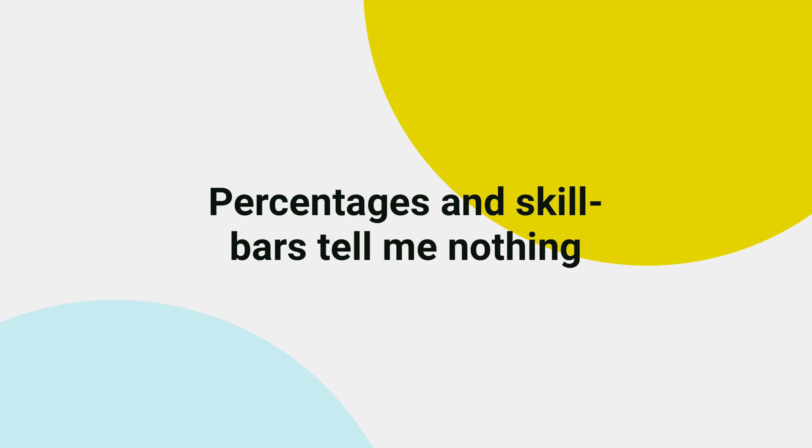Percentages and skill bars tell me nothing. Something I've done myself in the past is adding progress bars or percentages to describe skills, but when you think about it, it doesn't add any value. For example, if you show 100% knowledge in JavaScript — well, what does that mean? That you're the best JavaScript developer in the world? Instead, use things like your projects or number of years of experience with a certain technology. These are numbers and content that are universally understood and add real value, for example to recruiters. So next time you describe your skills, don't use progress bars or percentages.